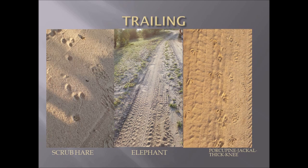In the middle, you can see individual elephant tracks moving down the path of the dirt track. On the right-hand side, you have porcupine tracks on the far right, jackal — black-backed jackal — moving through the middle also towards the top of the screen, and then the thick-knee bird tracks, which has two sets of tracks moving down on the left and in the middle of the picture.